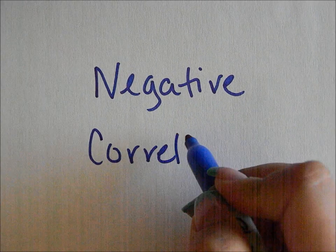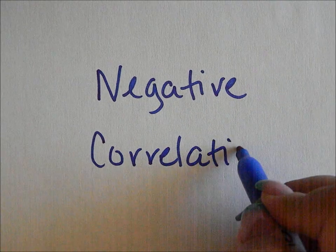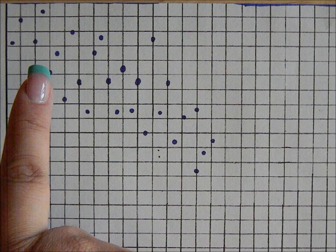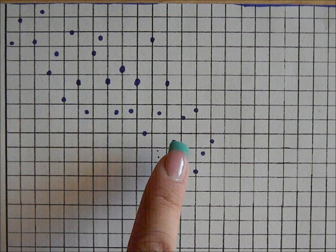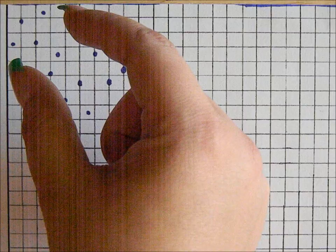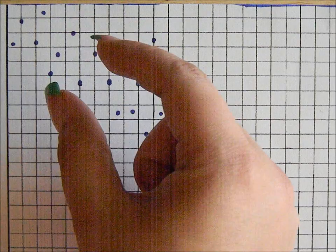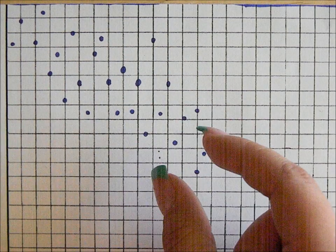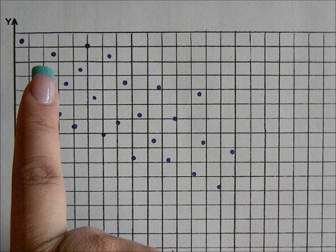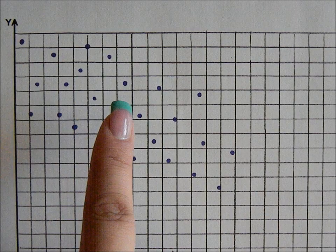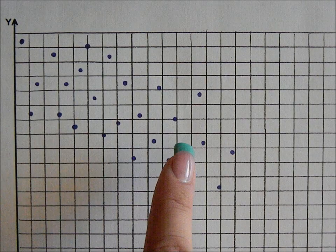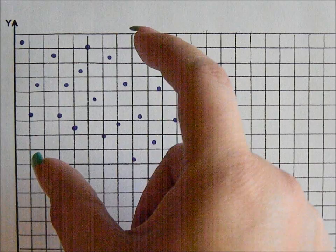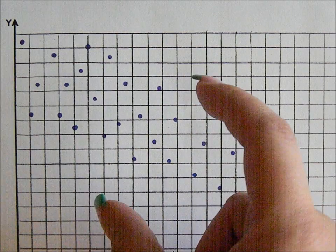Negative correlation is where the points are forming a negative slope. The points are decreasing. They could be tight, or as the other picture shows, they could be wide also, but still in a negative slope or a negative correlation.